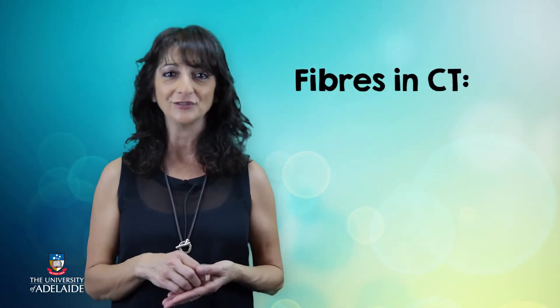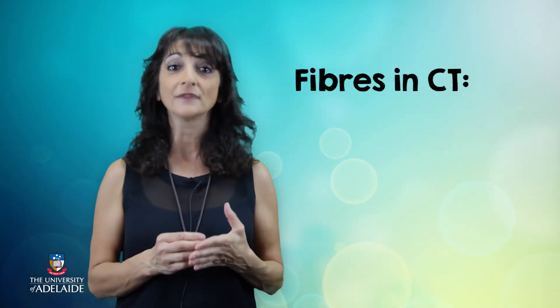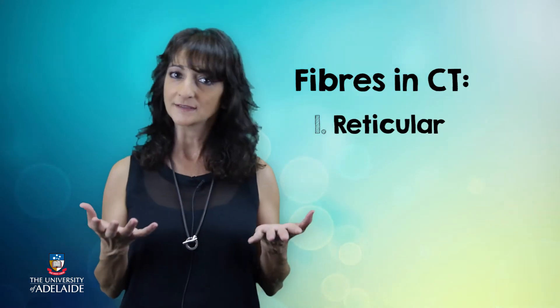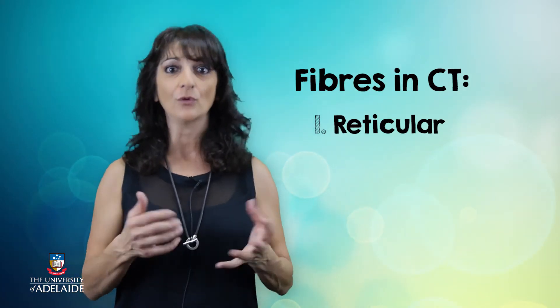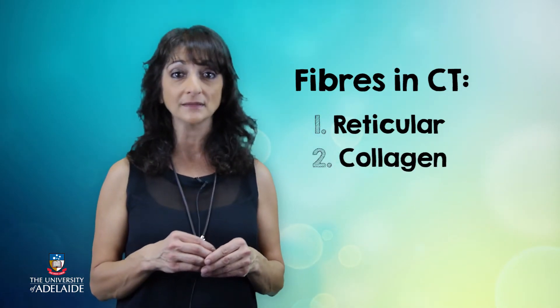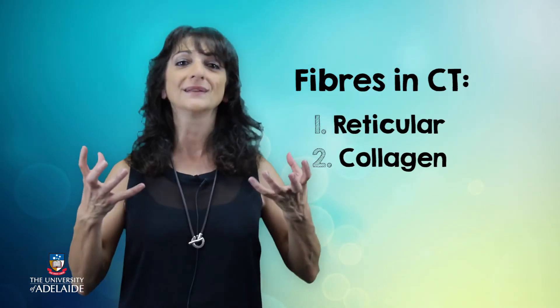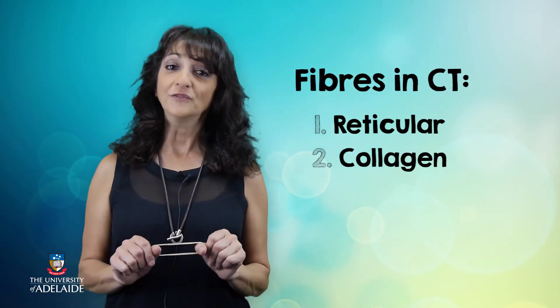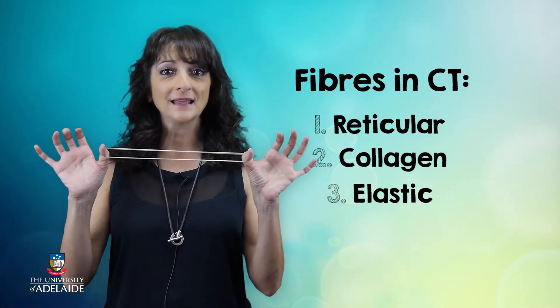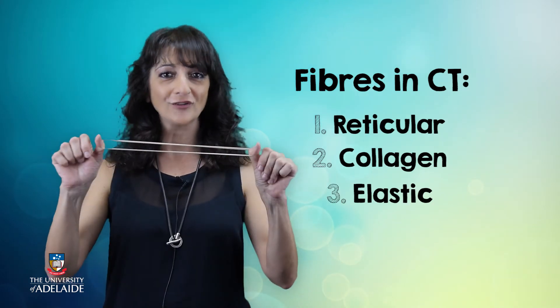Now that we're familiar with the cell types in loose connective tissue, it's time to explore the types of fibres found in this tissue. It is firstly made up of strong reticular fibres that form branching networks, almost like a sling that protects our organs. It also contains stronger collagen fibres that provide resilience and strength, and finally slender and stretchy elastic fibres that can recoil after a long stretch.